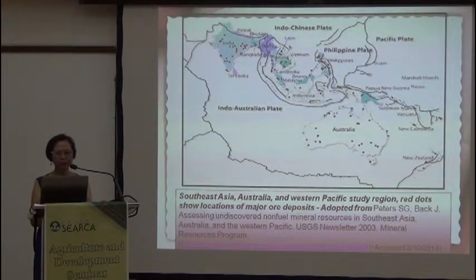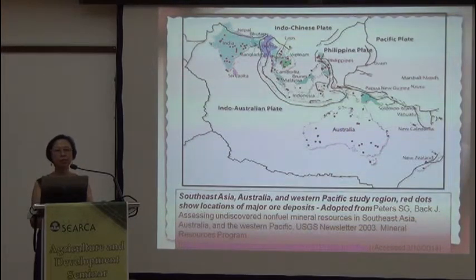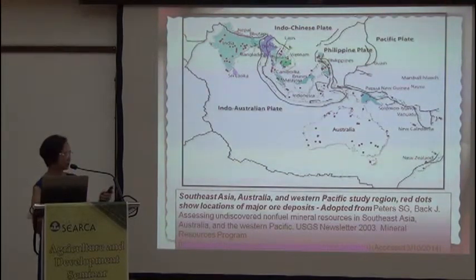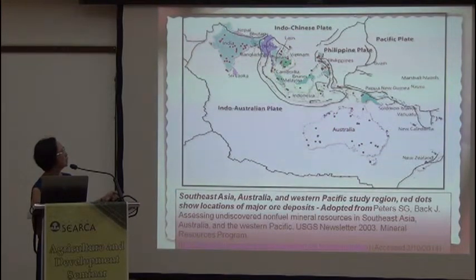This is a map of Southeast Asia, Australia, and Western Pacific, which shows that these areas are rich in mineral, non-fuel, non-phosphate fuel mineral resources. As you can see, our country is one of those countries which are really rich in mineral resources.